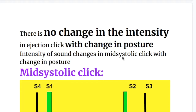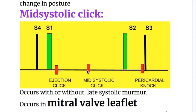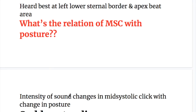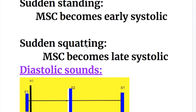Mid-systolic click is a systolic sound. Intensity of this sound changes with change in posture, unlike ejection click. It occurs with or without a late systolic murmur, and arises in mitral valve leaflet prolapse due to unequal length of chordae tendineae. It is heard best at the left lower sternal border and apex. With sudden standing, mid-systolic click becomes early systolic; with sudden squatting, it becomes late systolic.